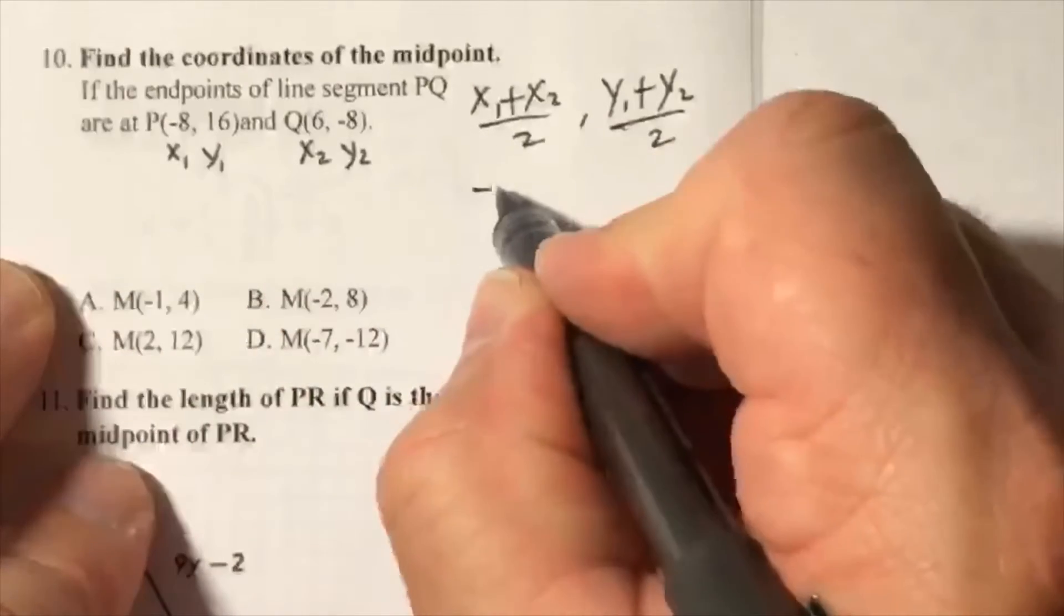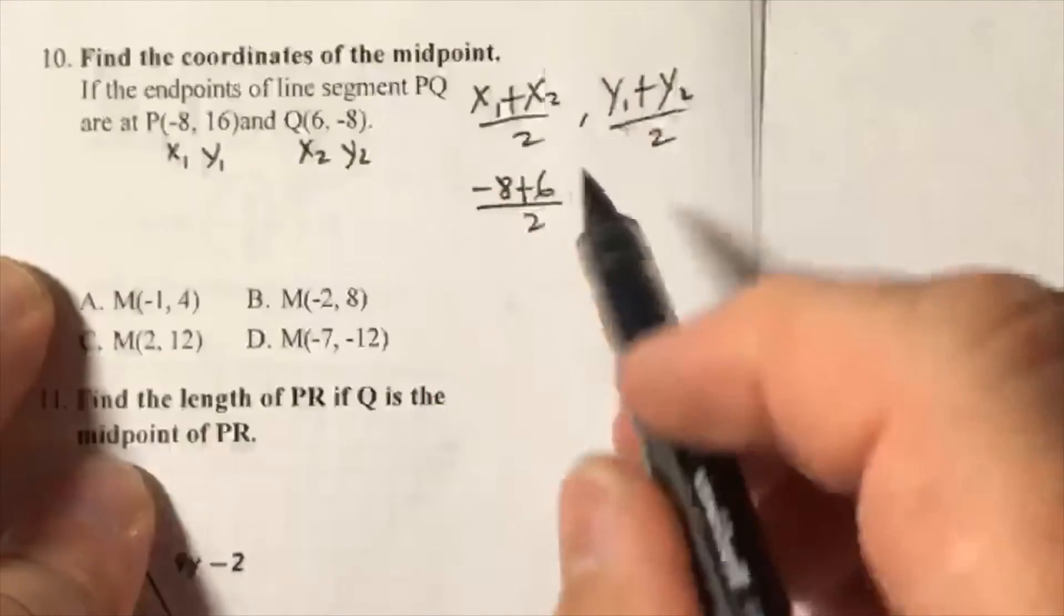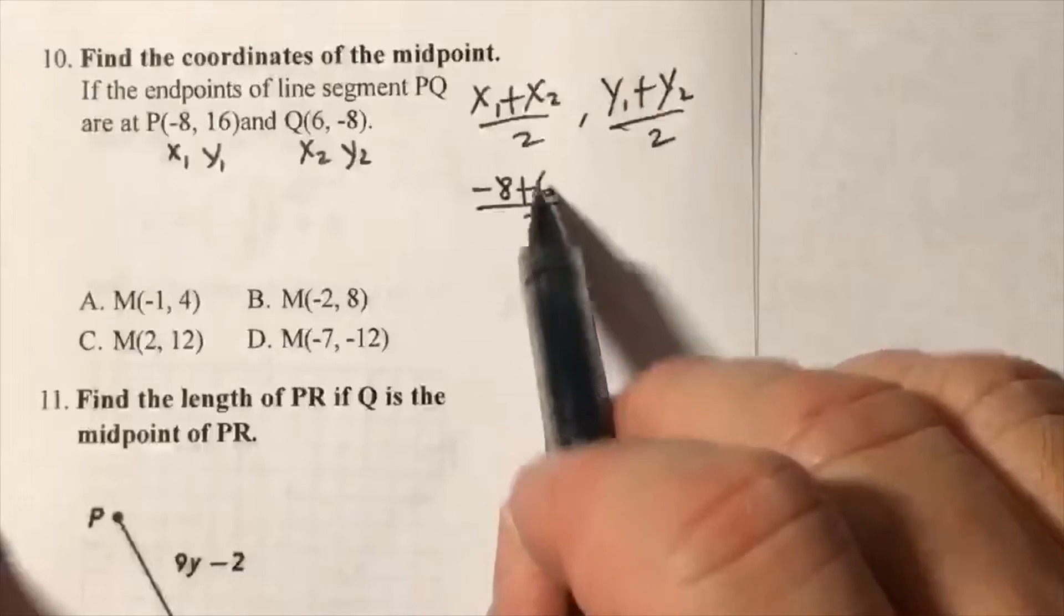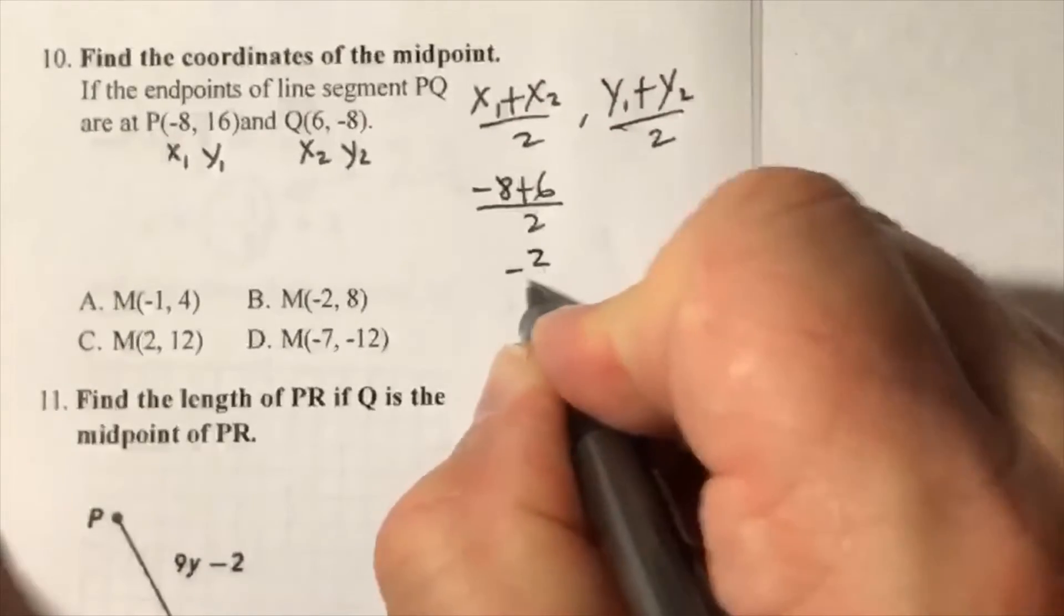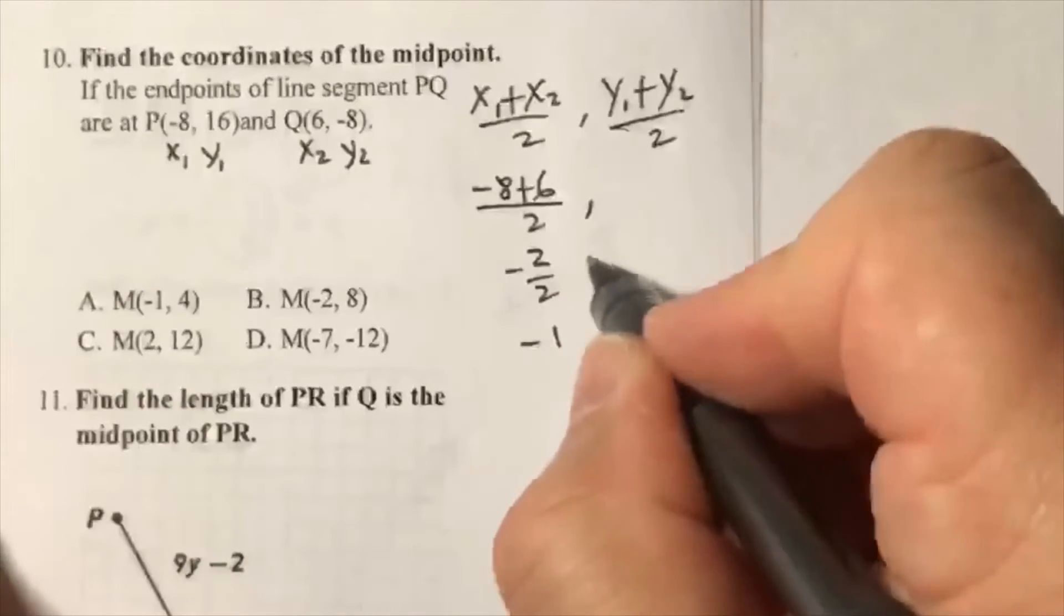plus 6. Negative 8 plus 6, divide by 2 - that's the formula. Negative 8 plus 6, that's negative 2, divide by 2, that equals negative 1. Okay, there's only one answer